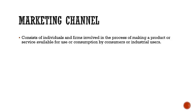The marketing channel is defined as consisting of individuals and firms involved in the process of making a product or service available for use or consumption by consumers or industrial users. A product would be something physical like a book or a can of Coke, and a service would be something like an accounting firm or a house cleaning business. Consumers versus industrial users refers to the end stage of the product or service — consumers would be you in the grocery store when you get the Coke, while an industrial user would maybe be a rivet manufacturer looking for high grade steel.